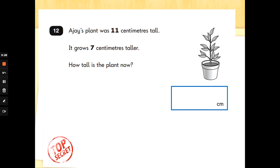Number 12. AJ's plant was 11 centimetres tall. It grows 7 centimetres taller. How tall is the plant now? So if it's getting taller, bigger, are we adding 7 centimetres or taking it away? That's right. I think it's an add too. 11 add 7.